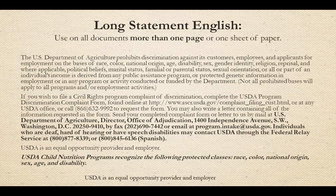This is the new long statement. The first paragraph of the statement includes more protected classes than are recognized by child nutrition programs. The Idaho Department of Education child nutrition programs received approval from USDA to add the last sentence at the bottom of the long statement that reads: USDA child nutrition programs recognize the following protected classes — race, color, national origin, sex, age, and disability. Make sure when you use the long statement, you get the entire statement on your document. If you have not updated the long and short statement, update them immediately on posted materials and in the next printing of all other materials. Printing updates must occur by August of 2014.